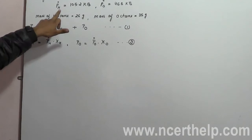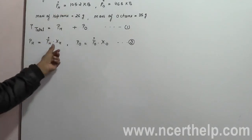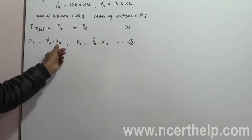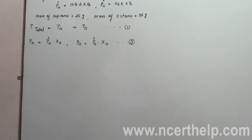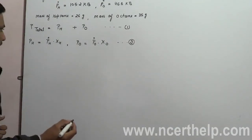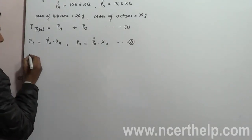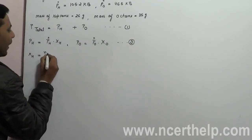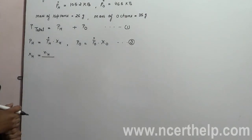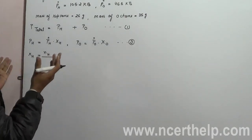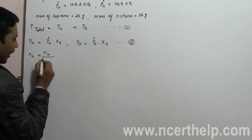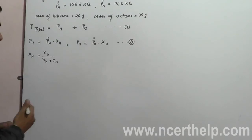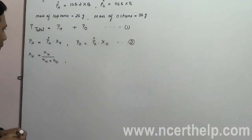The pressure of pure heptane is already given in the problem, so we have to calculate the molar fractions. The molar fraction of heptane equals the number of moles of heptane divided by the total number of moles — that is, number of moles of heptane divided by number of moles of heptane plus number of moles of octane.